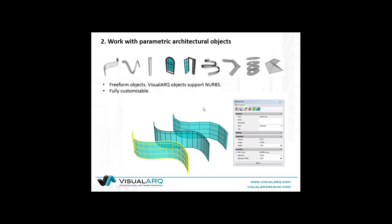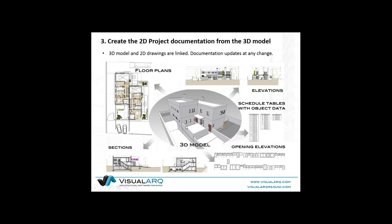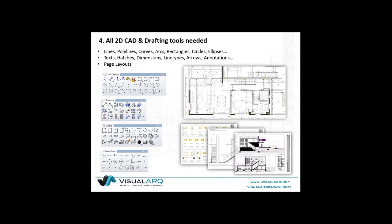The BIM concept — building information modeling — means that from the 3D model, all the floor plans, elevations, drawings, schedules, quantity takeoffs, and schedule tables are attached to the 3D model, so they update automatically after any change. Rhino itself provides all the 2D CAD and drafting tools required to finish the documentation work — page layouts, dimensions, annotations, etc.